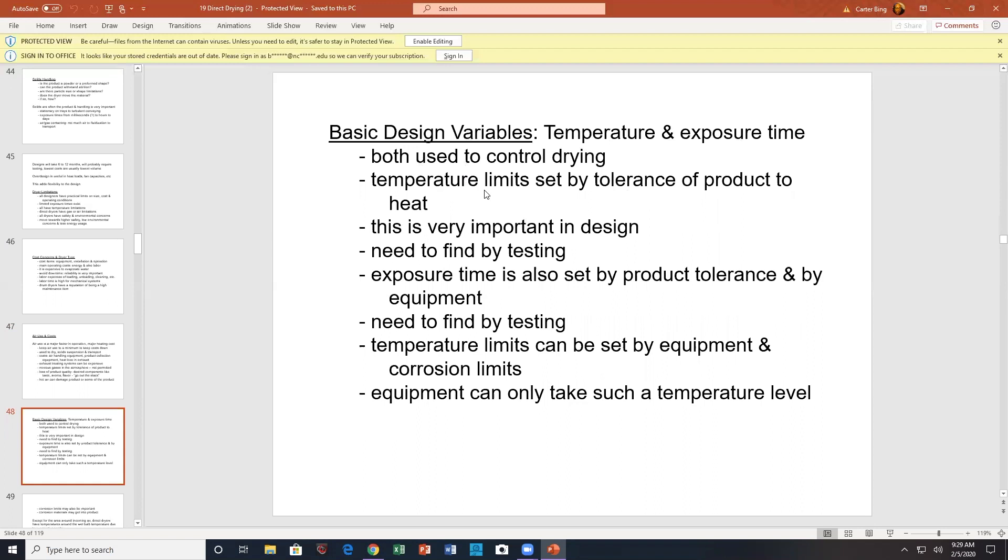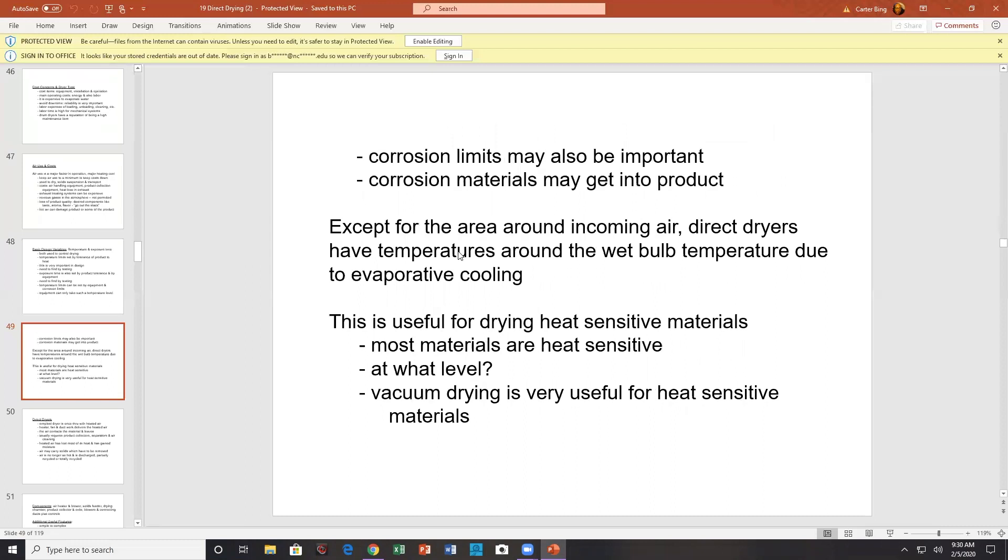Temperature limits set by the tolerance of the product to the heat. Very important in design. Need to find by testing. Exposure time is also set by the product tolerance by the equipment. Again, need to find by testing. Temperature limits can be set by equipment exposure limits. Equipment can only take a certain temperature limit. Corrosion limits of the machine, corrosion limits of the material, perhaps.